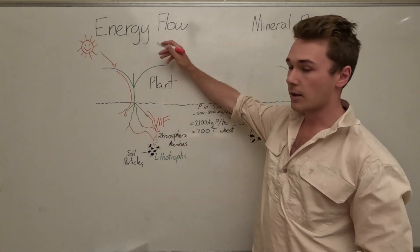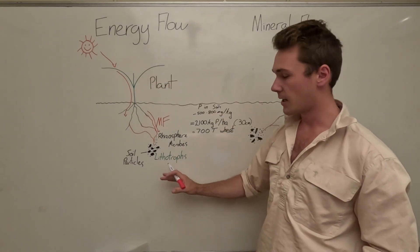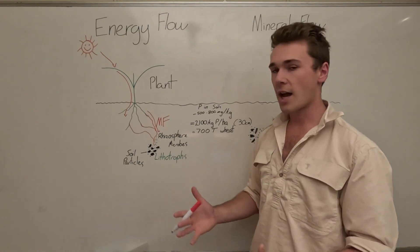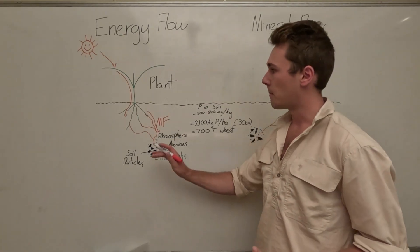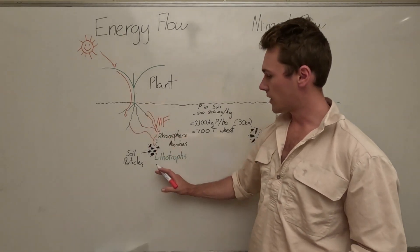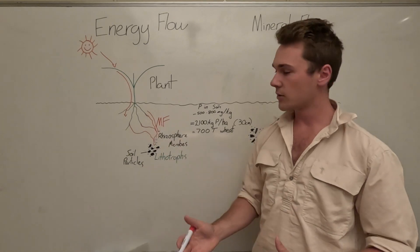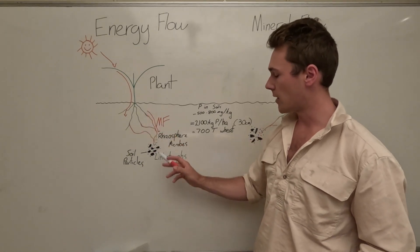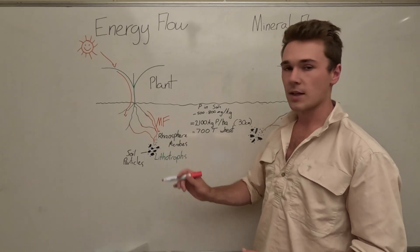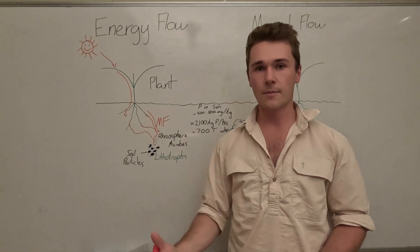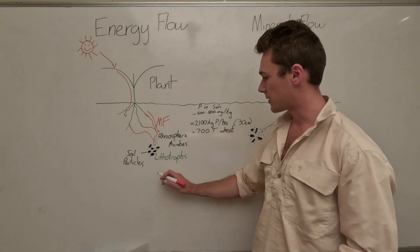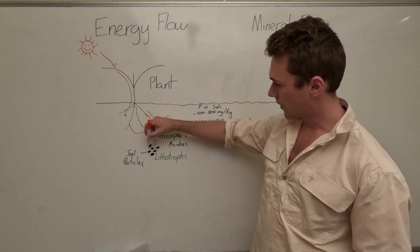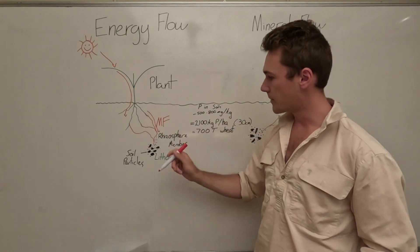By the plant contributing a lot of energy to the lithotropes as a carbon source, the lithotropes then exchange different nutrients back up to the plant. Say for example the plant needs phosphorus, it can communicate down the chain to the mycorrhizal fungi to the lithotropes to say I need phosphorus, I'll give you some sugar in exchange for phosphorus. Lithotropes then mine the soil particles to produce phosphorus and it goes back up the chain.